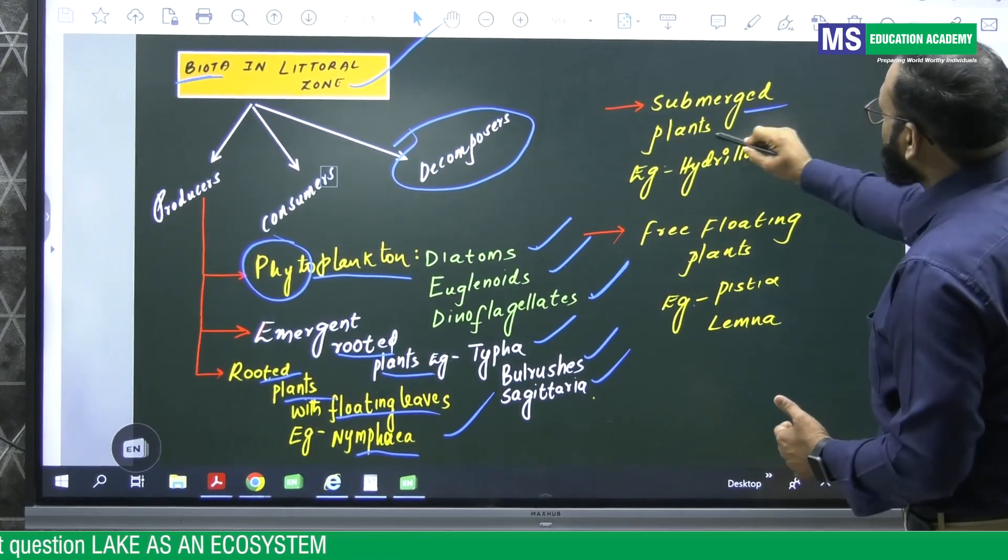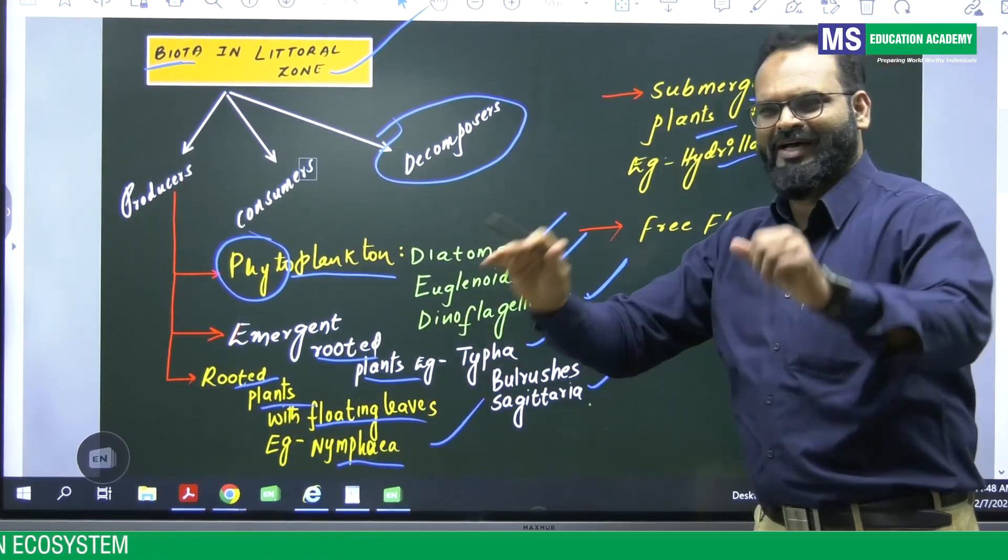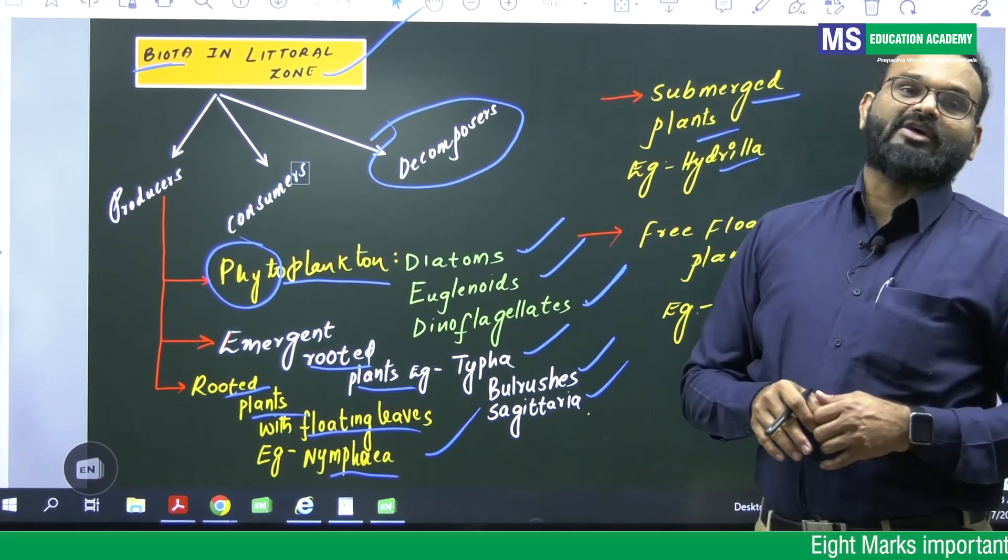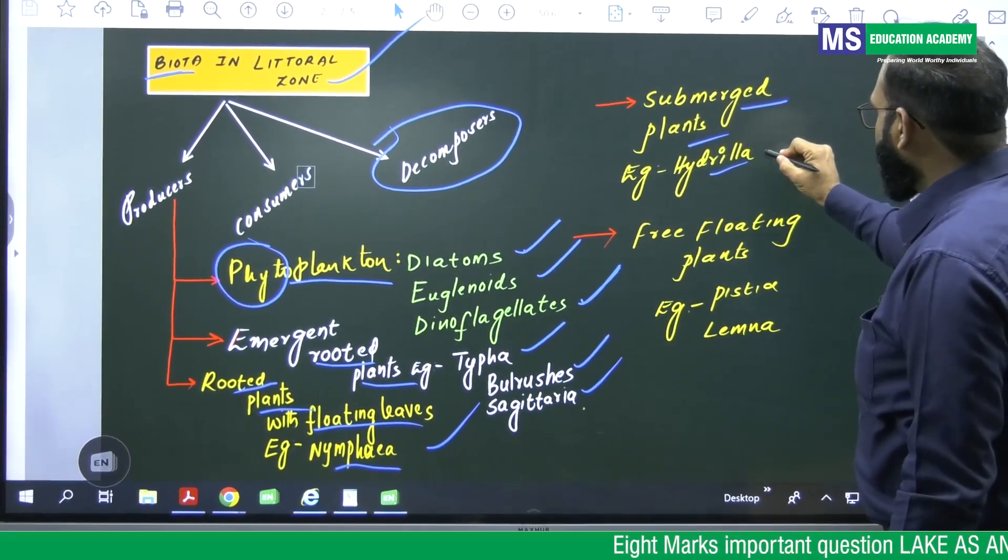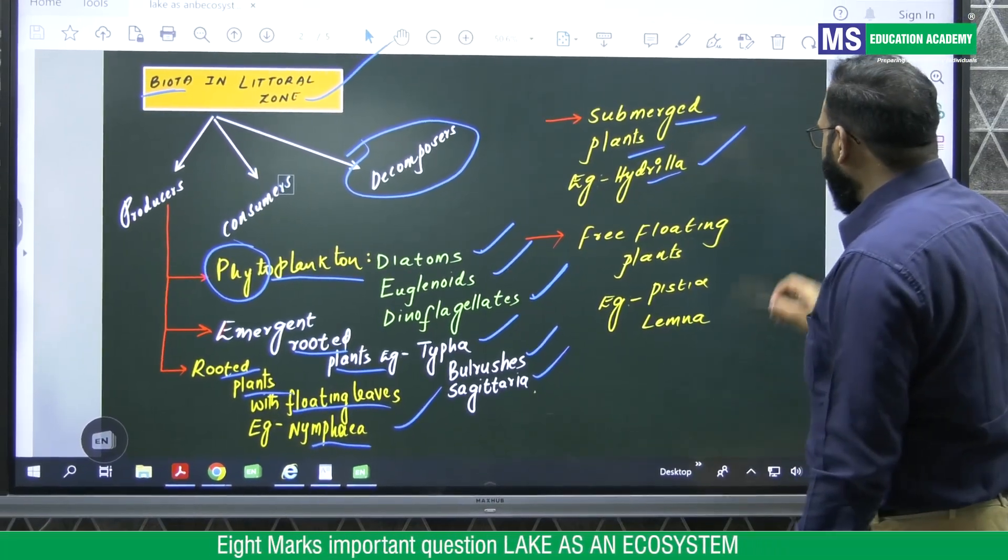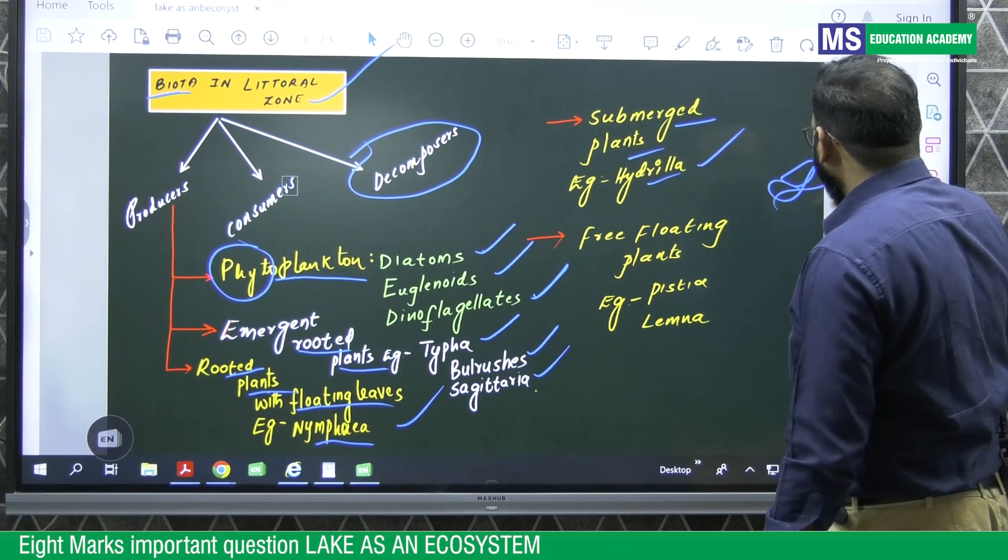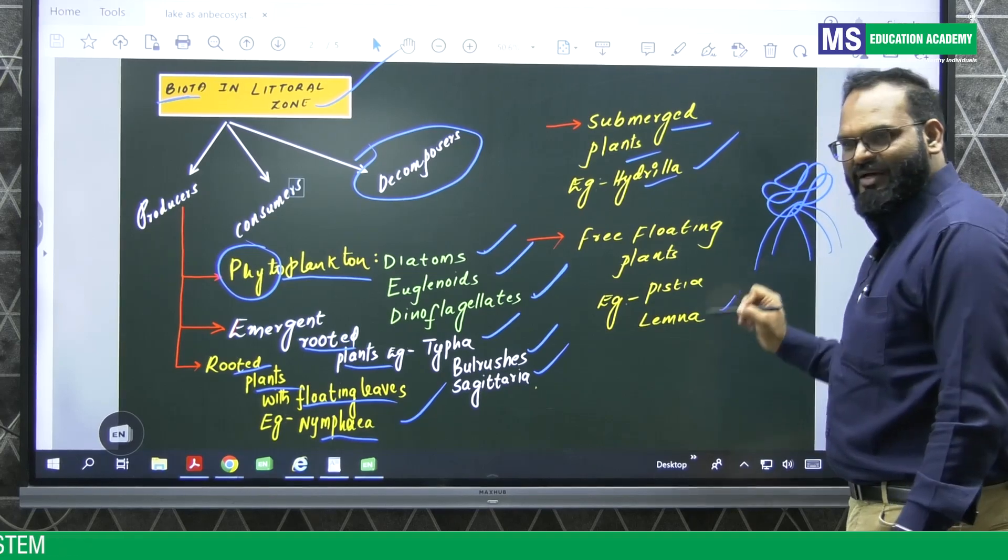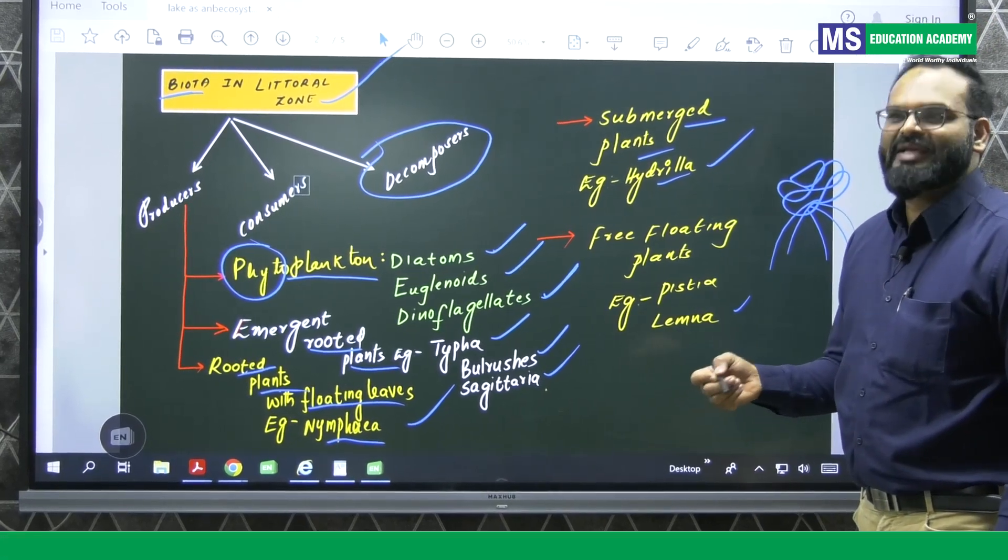And plants which are totally submerged in water, they will not be seen outside. They are present inside the water. Example, Hydrilla. When it comes to free-floating plants, Pistia, so you have studied even in botany, Lemna, Eichhornia, etc.